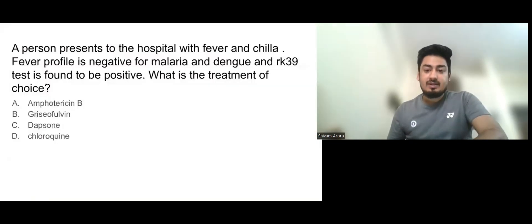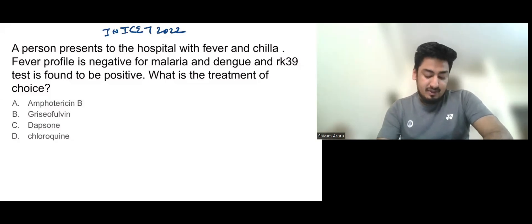Let us start with this question which came in INICET 2022. A person presents to the hospital with fever and chills. Fever profile is negative for malaria and dengue, and RK39 test is found to be positive. What is the treatment of choice? First of all, you should know that RK39 test is used for leishmaniasis or Kala-azar.